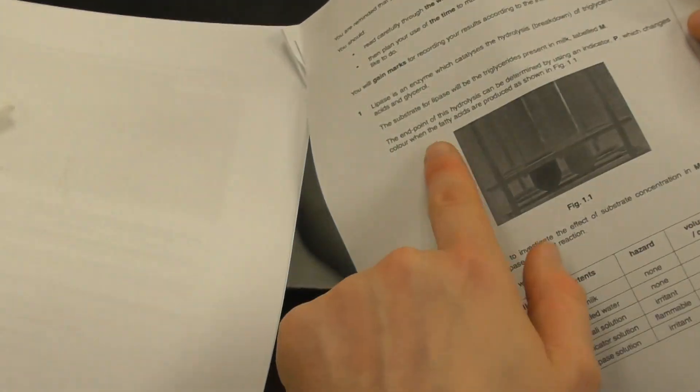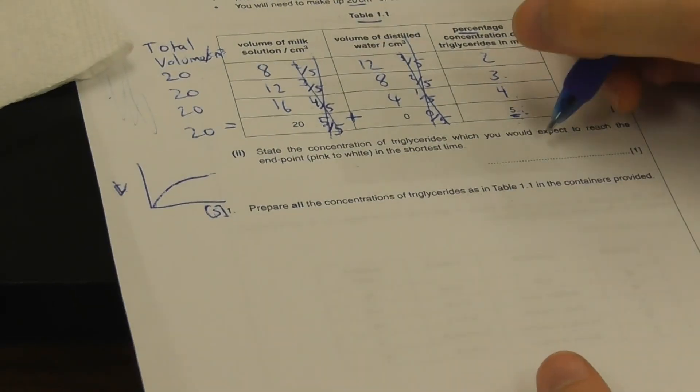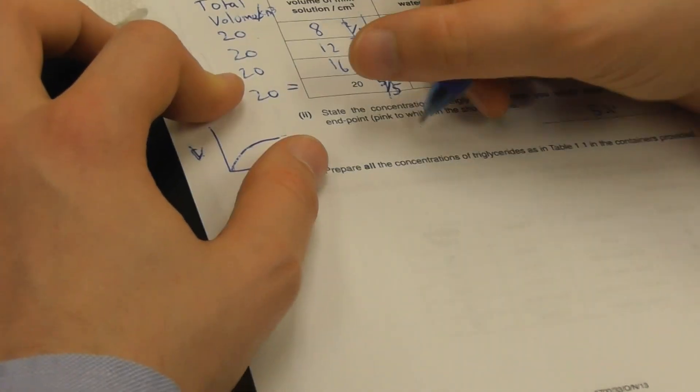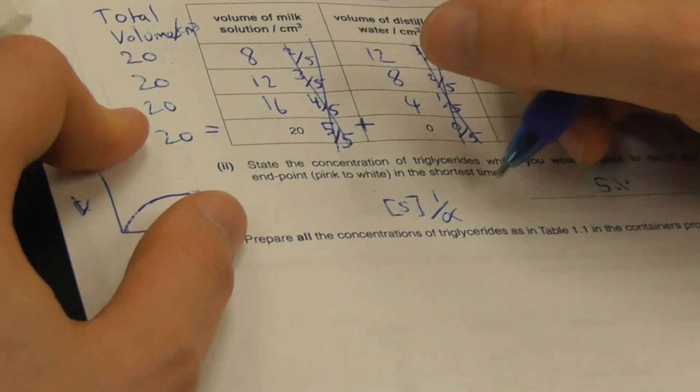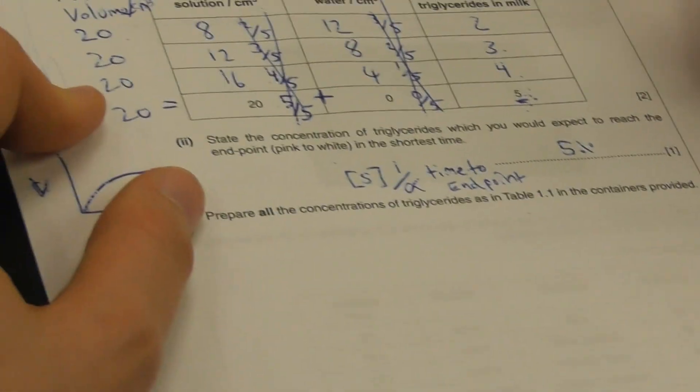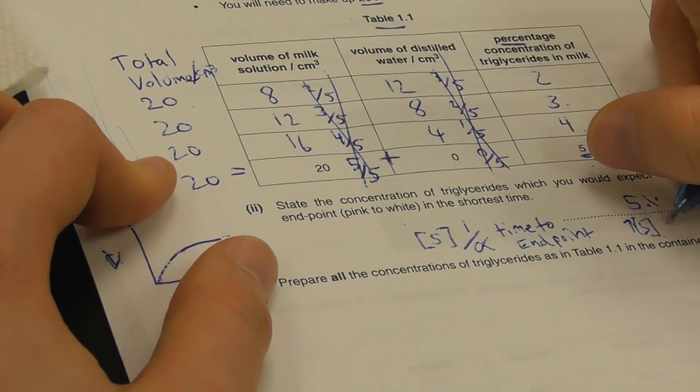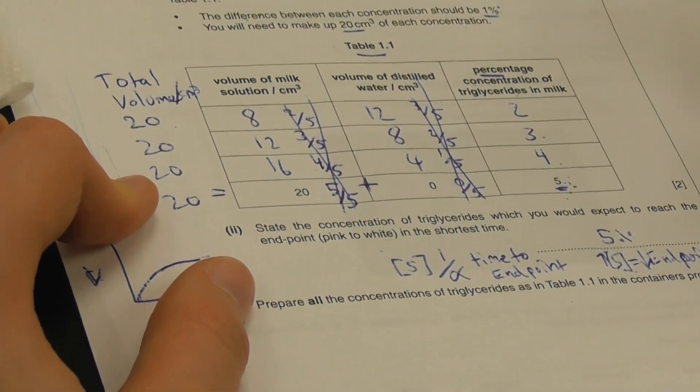When we look back here, hydrolysis of the lipase will be, the substrate for the lipase will be triglycerides. 5% is our highest concentration. We expect that 5% is going to be the highest concentration. We expect that that is going to be the shortest time. Remember that as substrate concentration increases, that will be inversely proportional to our time to end point. So that means that as substrate concentration increases, end point time decreases.